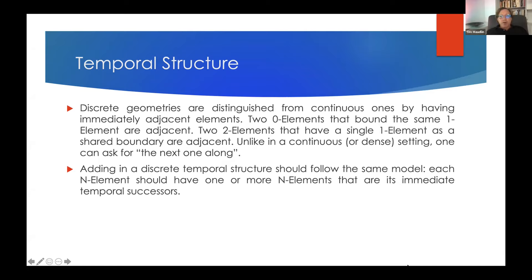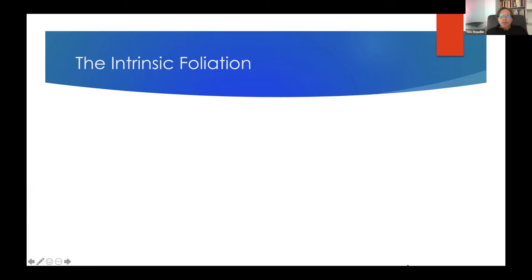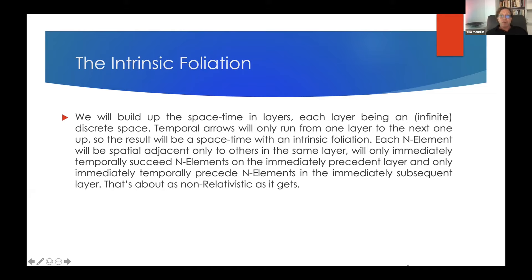Following that model, we introduce arrows with a directionality — because time has a directionality — connecting different layers of the spatial structure. By following the arrows they'll take you from any N-element to its immediate successors in time. There's going to be an intrinsic foliation, because we're going to build up the spacetime in layers: take a spatial layer, put another spatial layer above it, draw arrows from one to the next, and so on. This is as non-relativistic as you could imagine.